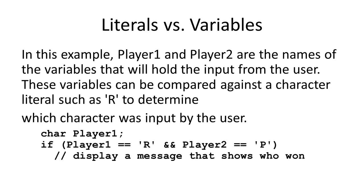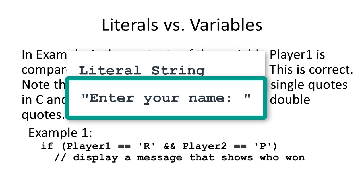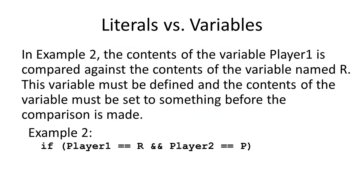Let's discuss literals and variables. A numeric literal would be something like 5, -12, or 37.962. A character literal might be the character R or L. A character literal in C or C++ is defined by using single quotes around the literal. If you have a literal string, it's defined using double quotes. Without quotes, something like R is the name of a variable, and you have to declare and initialize it before use. But if we use a single quote around the R, then it's a literal, and we can compare a variable against that literal.